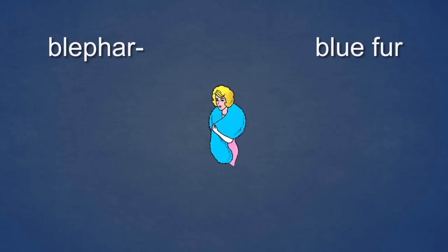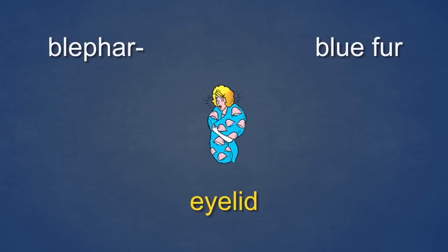Next, the element Blephar. Blephar sounds a little like blue fur. Here is a lady wearing a blue fur. Blephar means eyelid, so as you look at the blue fur, all of a sudden it is covered with eyelids — they even wink at people walking by. Imagine the blue fur with eyelids all over it and you won't forget that blephar means eyelid. Blephar. Blue fur. Eyelid.